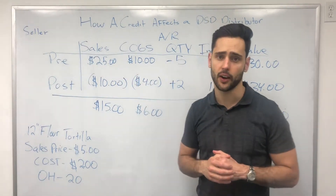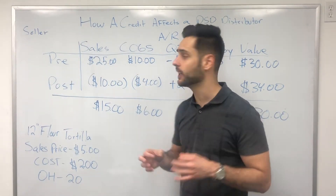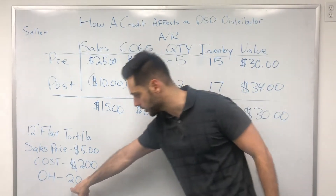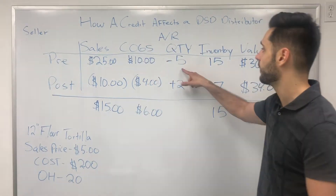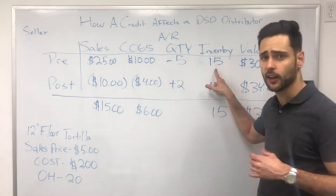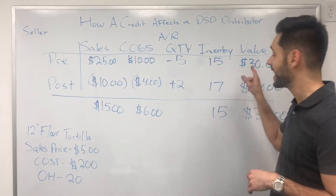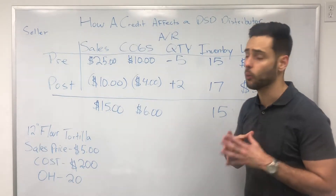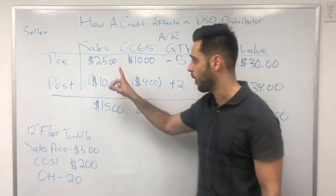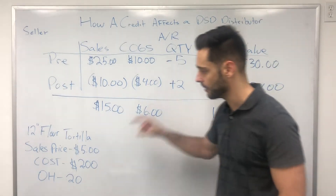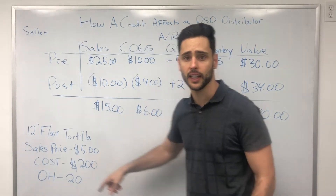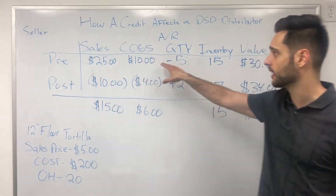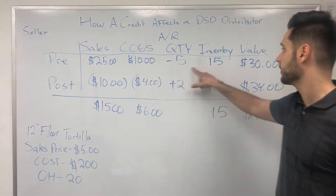Now what happens to the inventory when we make this sale? The inventory is going to decrease by five. So if I started with 20 on hand and decrease by five, my current inventory in the accounting system is 15. My inventory value — which is the quantity on hand remaining (15) times the cost ($2) — gives you a $30 asset value. That's the effect of the sale on your accounting and inventory.